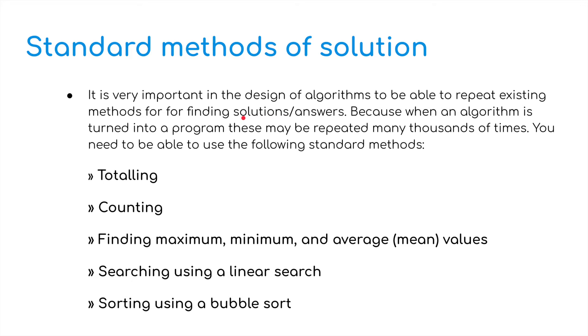Moving on to standard methods of solution. We've got five different elements which need to be covered in the IGCSE. It's very important in the design of algorithms to be able to repeat existing methods for the finding of solutions and answers. Because when an algorithm is turned into a program, these may be repeated many, many times. Thousands of times in some cases. You need to be able to use the following standard methods: Totalling, counting, finding the maximum, minimum and the average, the mean values. Searching using a linear search. And sorting using bubble sort.